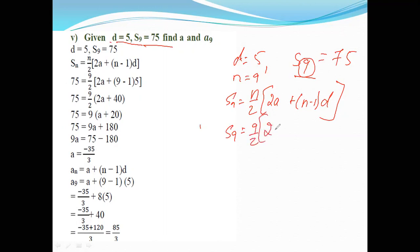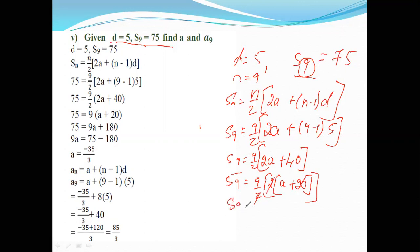So S₉ is equal to 9 by 2 into 2a plus 8 into 5. After canceling, 9 is equal to 9a plus 180. 2 into 9 is 18, so it will become 180. Therefore, S₉ is equal to 9a plus 180.